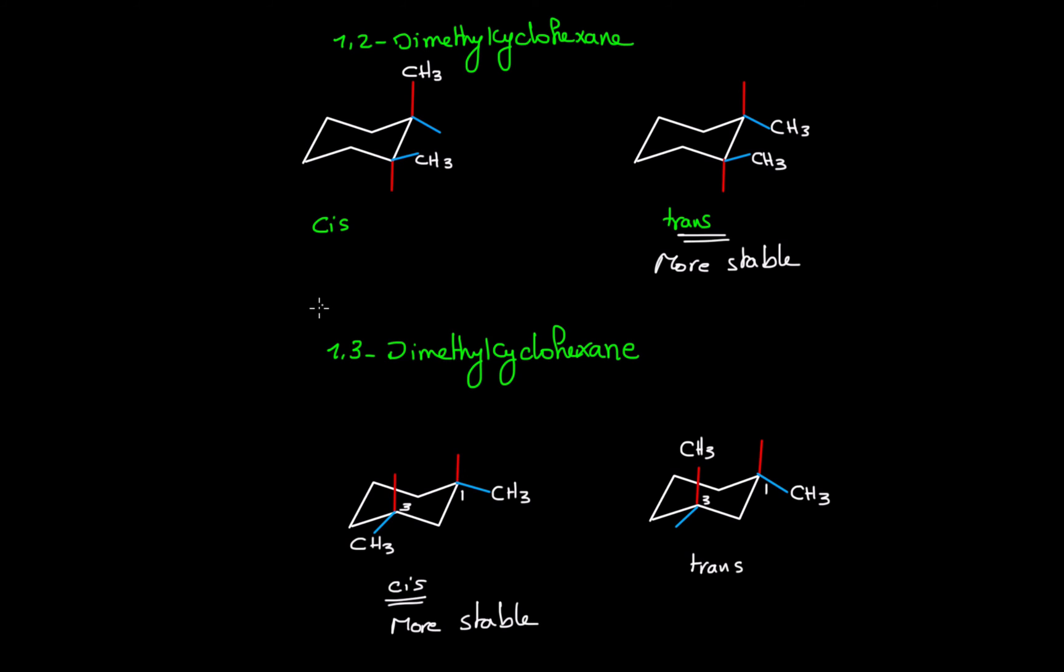So to answer the question of whether cis or trans is more stable in a chair conformation, you have to consider the position of the substituents. 1,2-dimethylcyclohexane will be different than 1,3-dimethylcyclohexane. For 1,4-dimethylcyclohexane, it will be similar to 1,2-dimethylcyclohexane.